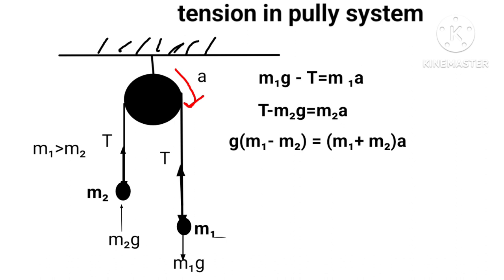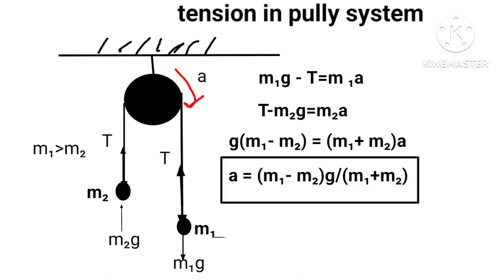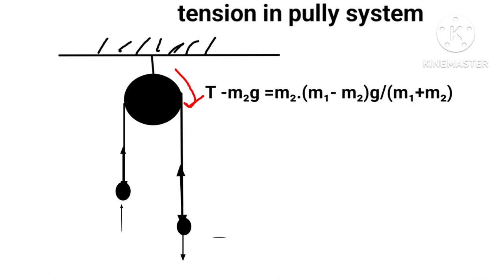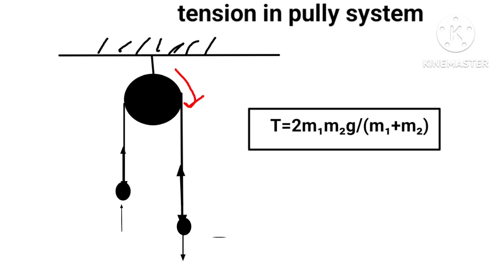Hence a = (m1 − m2)g / (m1 + m2). Substituting a into T − m2g = m2a and solving, we get T = 2m1m2g / (m1 + m2).